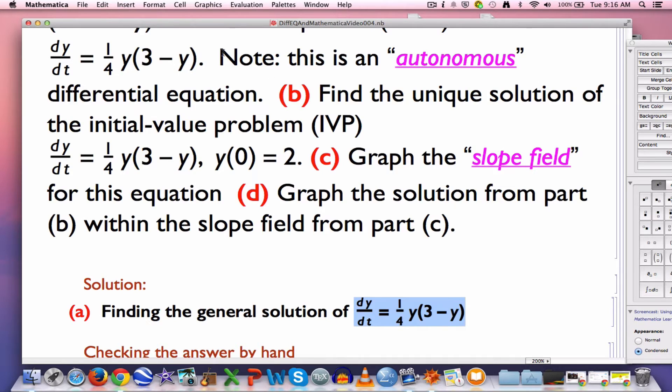This is what we call an autonomous equation. What does that mean? It means when you have a differential equation of this form, that the right-hand side is independent of t. Autonomous basically is synonymous with independent. In this kind of situation, it means the right-hand side is independent of t.